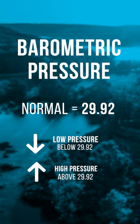Before we get into the details of high and low pressure, we first need to understand what normal standard barometric pressure is. Normal standard barometric pressure is 29.92, so anything below that is low pressure and anything above that is high pressure. You also have falling or rising pressures, which can affect the fish differently.